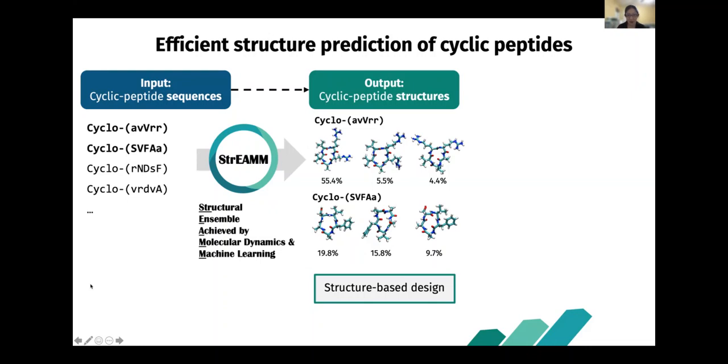For example, 55.4% will adopt this structure, 5.5% will adopt this structure, and so on and so forth.